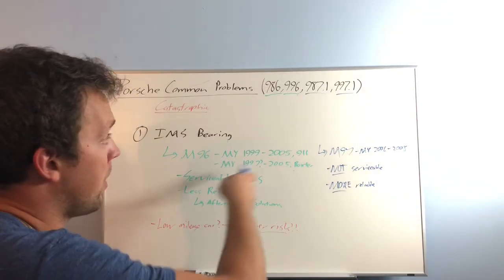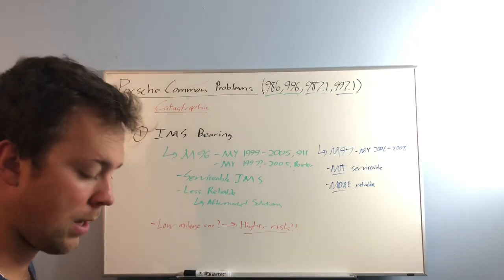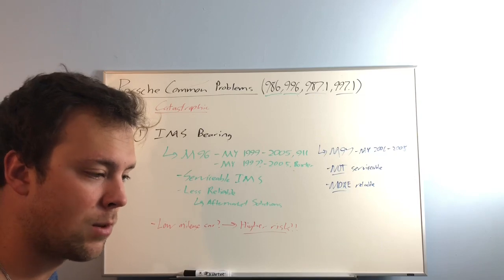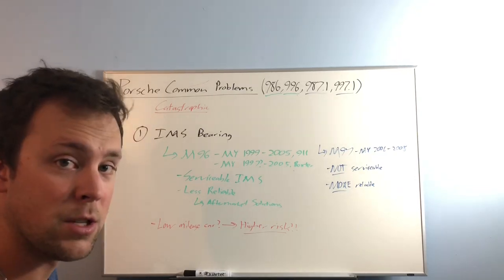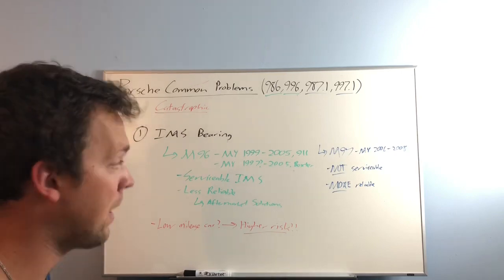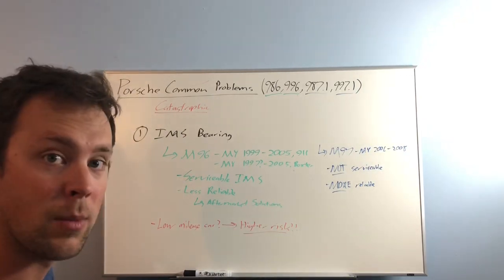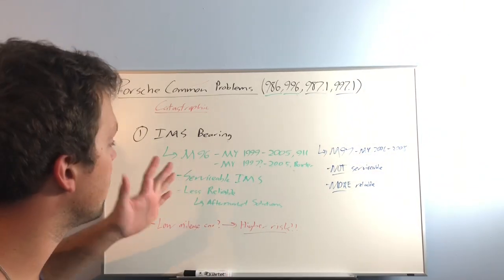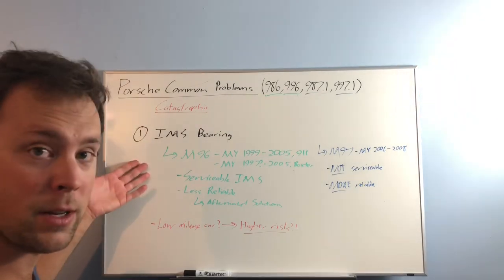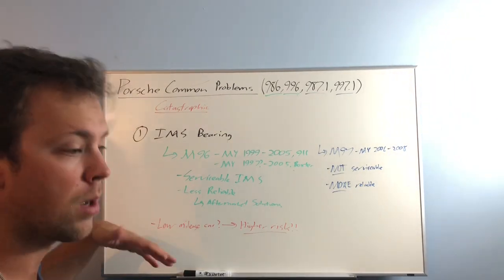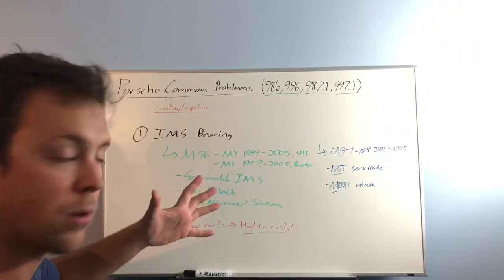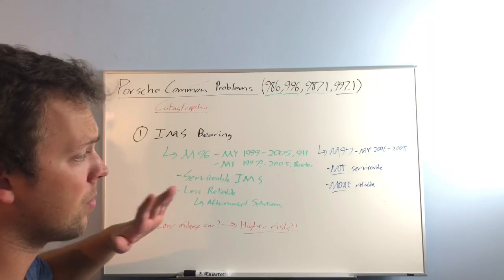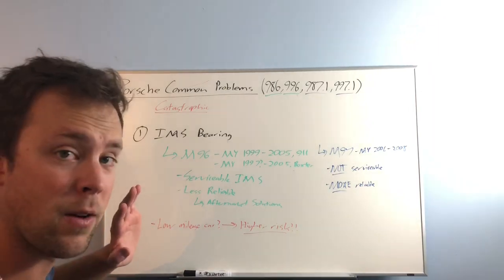Am I personally worried about the IMS bearing failure on my 987.1 Cayman S? No. Truthfully, I'm not. It's known to be a robust engine. And the fact that it's not serviceable doesn't really scare me that much. I wouldn't stay away from either of these engines because it just depends on which route you want to go. You can go the M96 route and have a serviceable bearing, buy the car right away, put a brand new bearing in it, and you know you're okay. Or you can buy an M97 engine and you know that, odds are, unless it's a really low mileage car, you're not going to have any issues.